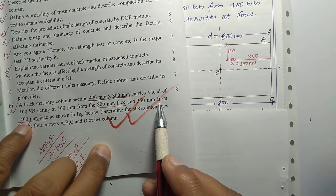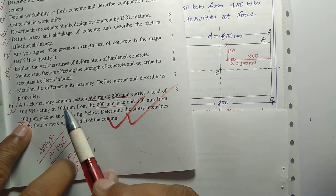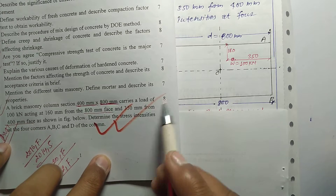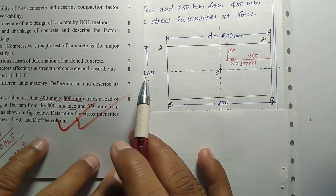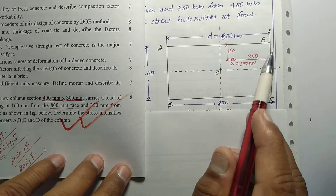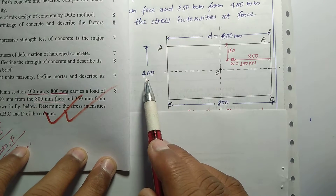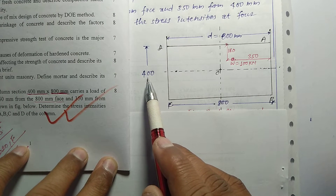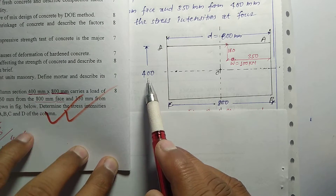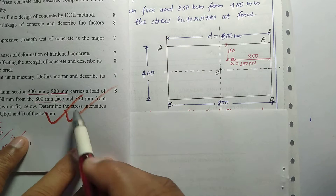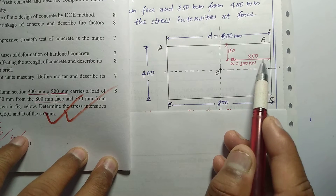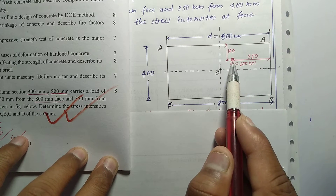The second eccentricity is 350 mm from the 400 mm face.